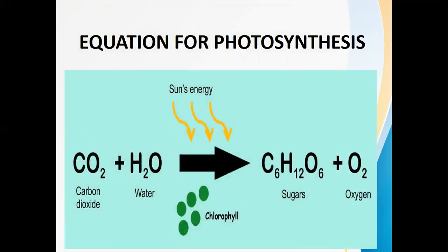Now this is the chemical equation describing the process of photosynthesis. The plant takes carbon dioxide from the environment and water from the soil. In the presence of sunlight and chlorophyll, the plant makes sugar and oxygen. The chemical formula for sugar is C6H12O6 and for oxygen is O2. This sugar is stored in different parts of the plant.